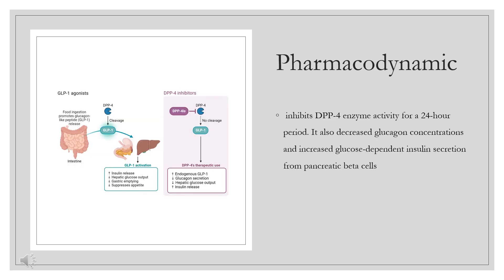Pharmacodynamics: Post-administration of Saxagliptin, GLP-1 and GIP levels rise up to 2–3-fold. Because it is very selective for DPP-4 inhibition, there are fewer systemic side effects. Saxagliptin inhibits DPP-4 enzyme activity for a 24-hour period. It also decreases glucagon concentrations and increases glucose-dependent insulin secretion from pancreatic beta cells. The half-maximal inhibitory concentration (IC50) is 0.5 nmol/L. Saxagliptin did not prolong the QTc interval to a clinically significant degree.